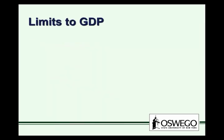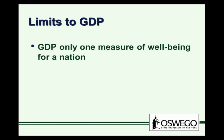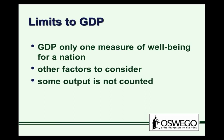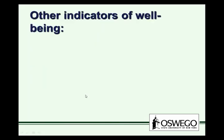GDP is a handy measure of output and is sometimes used to measure the wealth of a nation, but there are limits to gross domestic product and what it's actually measuring. GDP is only one measure of well-being for a nation — nations with a larger GDP are sometimes considered better off, but there are limits to this. There are other factors to consider in terms of well-being, and factors about what GDP is counting and what GDP is missing.